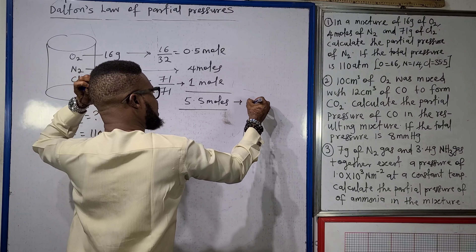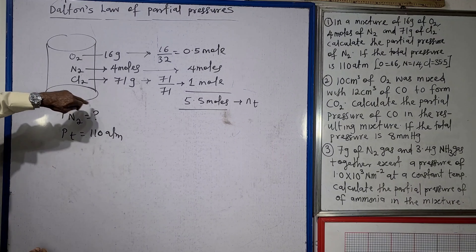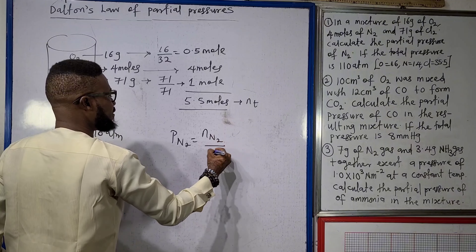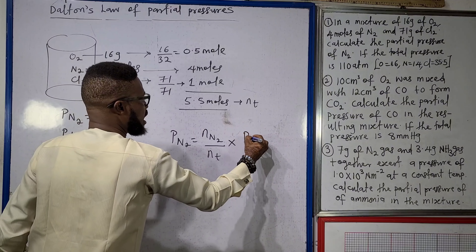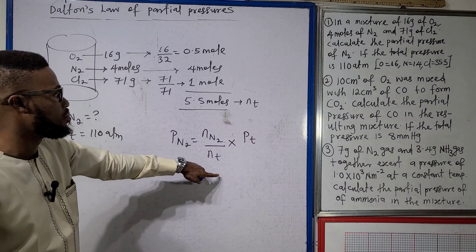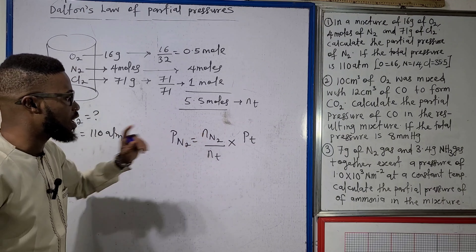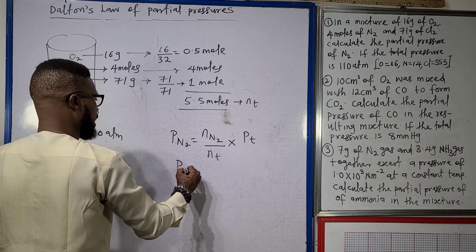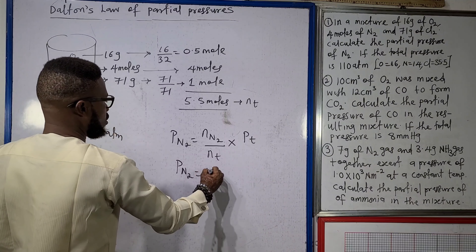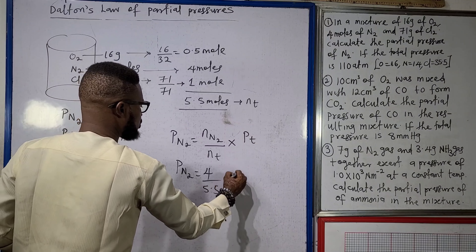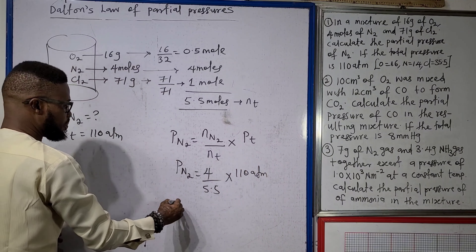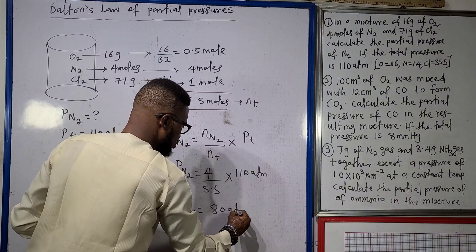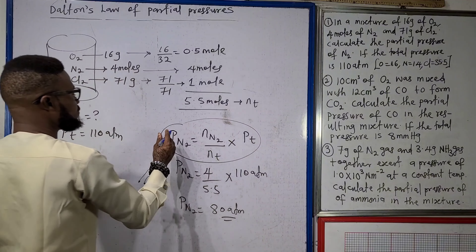That is our total number of moles nT. The partial pressure of nitrogen equals the number of moles of nitrogen divided by the total number of moles, times the total pressure — that's the mole fraction of nitrogen times PT. So partial pressure of nitrogen = (4 / 5.5) × 110 atmospheres = 80.3 atmospheres (approximately 80 atmospheres).